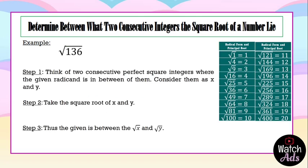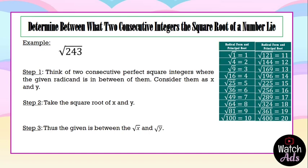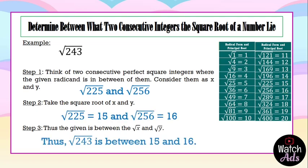Another example is the square root of 136. Looking at our side note, it is located between the square root of 121 and the square root of 144. Taking their square roots, the square root of 121 is 11 and the square root of 144 is 12. Therefore, the square root of 136 is between 11 and 12. Another example is the square root of 243. It is located between the square root of 225 and the square root of 256. Taking their square roots, we have 15 and 16 — giving us our final answer: the square root of 243 is between 15 and 16.